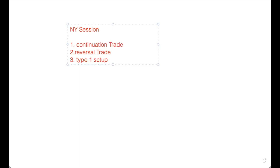Type 2s are very few and far between. The continuation trade ends up being very similar - pretty much the same thing as a type 3 trade that happens in New York. The only reason I call it a continuation trade is because it's continuing the original move that happened from the London session.